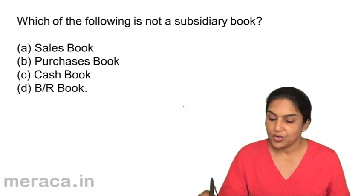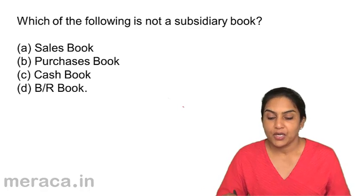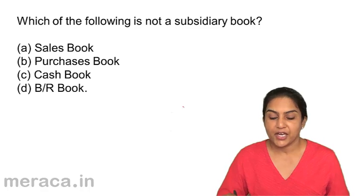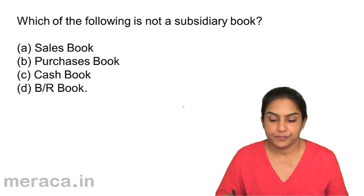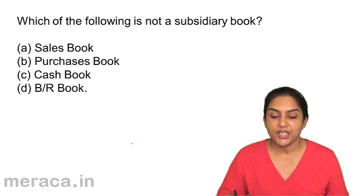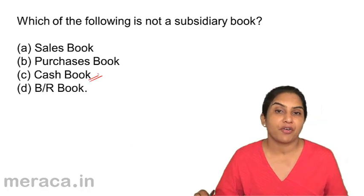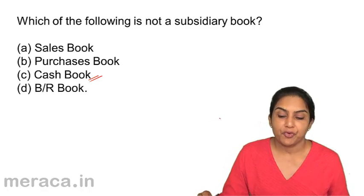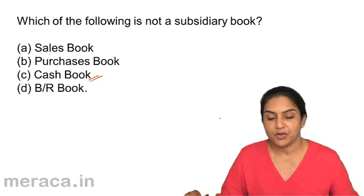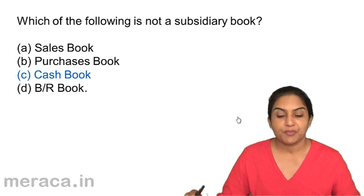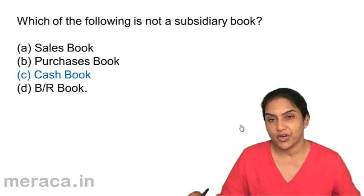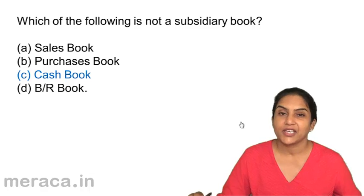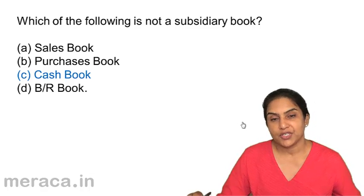Question 18: Which of the following is not a subsidiary book? A: sales book, B: purchases book, C: cash book, D: bills receivable book. These are all subsidiary books, however, a cash book is also a cash account and bank account — it represents actual ledger accounts. Therefore, the cash book is a part of the principal book of accounts. It is a book of original entry because transactions are first recorded there, but it is also in effect a ledger. So cash book is not purely a subsidiary book. Correct answer: C.